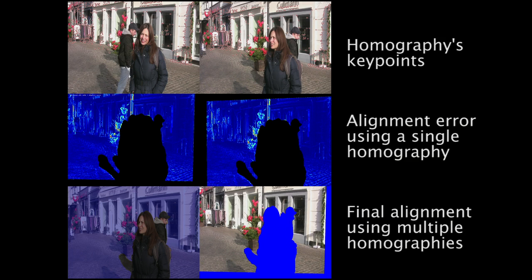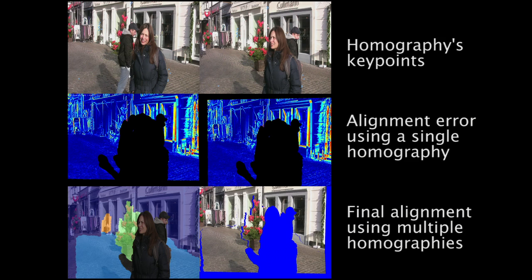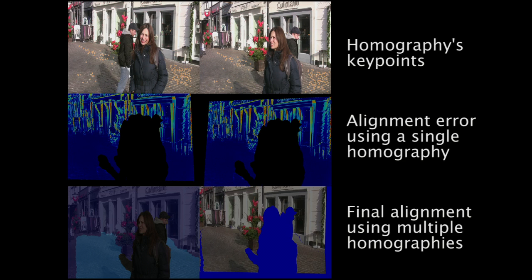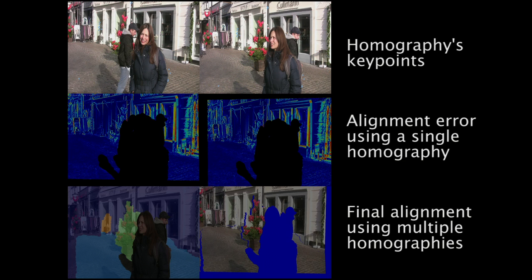For aligning a pair of frames, we find a set of candidate homographies which are computed from sparse keypoint matches using RANSAC. For instance, on this frame pair, the algorithm finds four homographies: one for the facade, one for the ground, one for the tree, and one for the showcase.